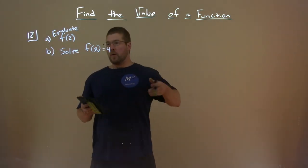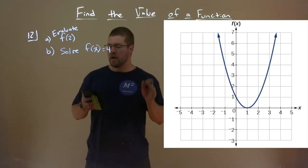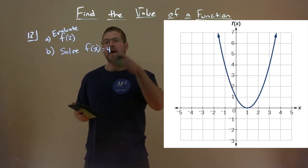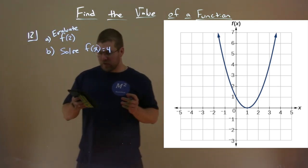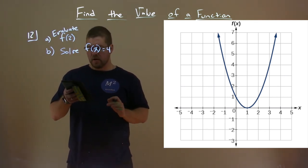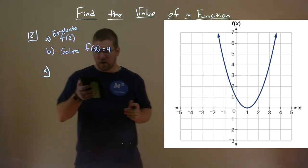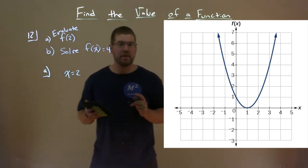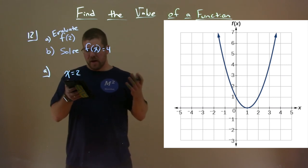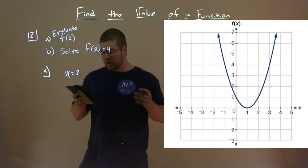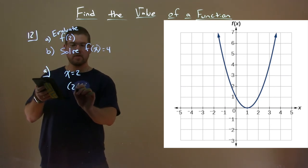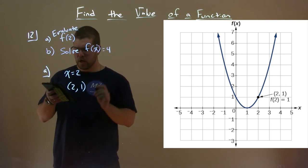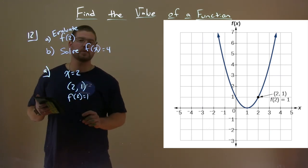We have our graph right here. We don't really know specifically what this function is, but they tell us we want to evaluate f(2) and solve f(x) equals 4. To evaluate f(2), 2 is our input - that's when x equals 2. If x equals 2, we can read the y coordinate of that point. Looking at our graph, when x is 2, the y coordinate is 1. So f(2) equals 1.